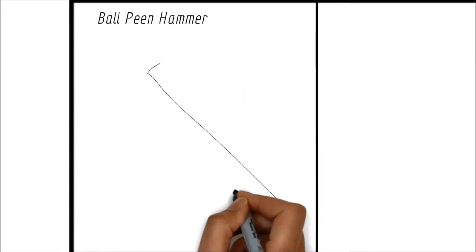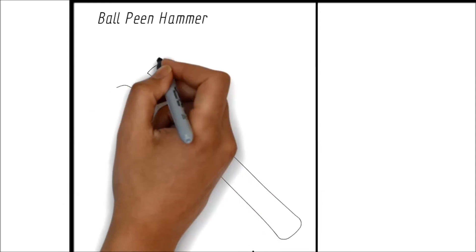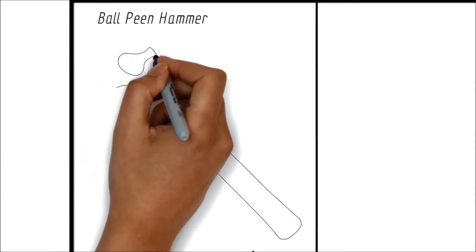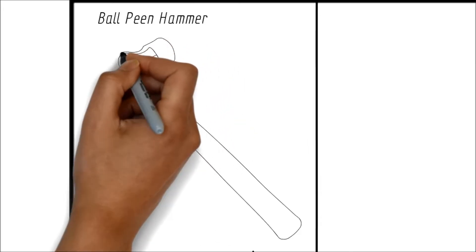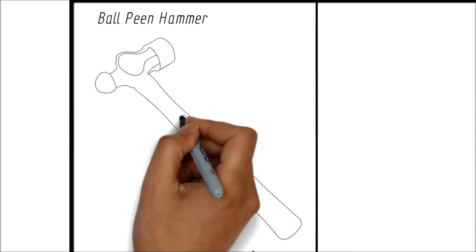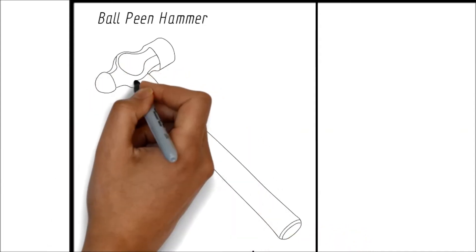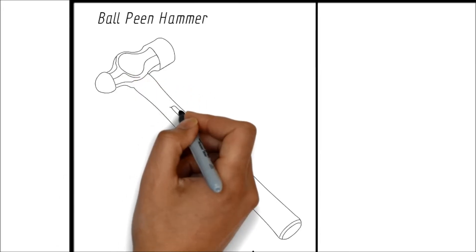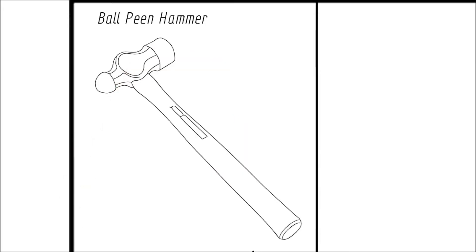The first and important hand tool is the ball pin hammer. Take great care to define the hammer. Now since it is done, let us see the parts of the hammer. Here is the handle, this is the head, and of course this is the pin, which is ball shaped.